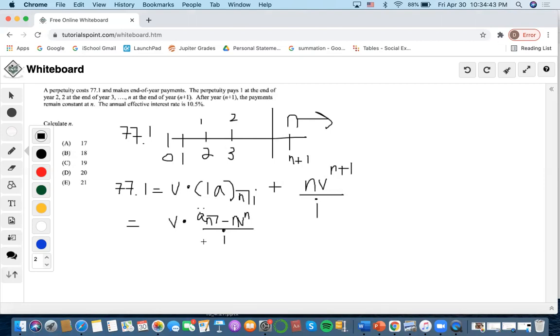We can convert this to (1 - v^n)/d, then bring down n times v^n over i.